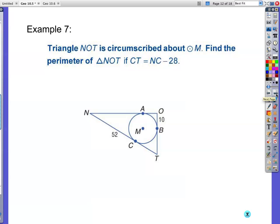Example 7, this says, triangle NOT is circumscribed. The triangle is circumscribed, but the name of the triangle is N-O-T. Every time I look at this, I'm like, what? It's circumscribed about circle M. Find the perimeter of triangle NOT if CT is equal to NC minus 28. I'm going to get you started on this one. I'm going to put CT is equal to NC minus 28. What we really need to find is NC, which is already given. I think I'm just going to let you finish that off. Example 7 is all yours.